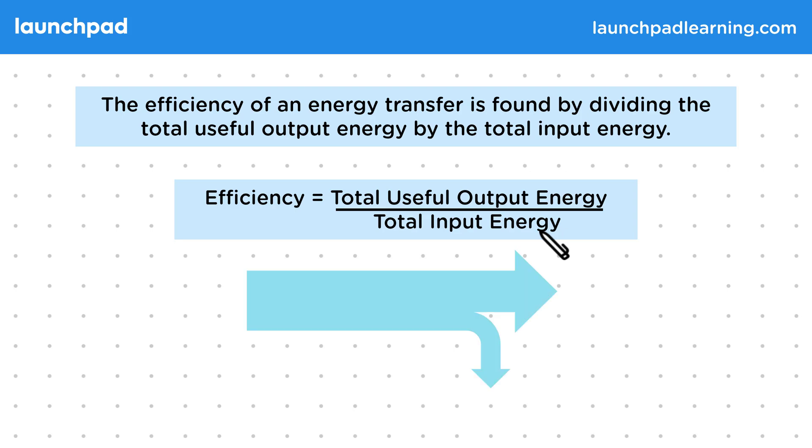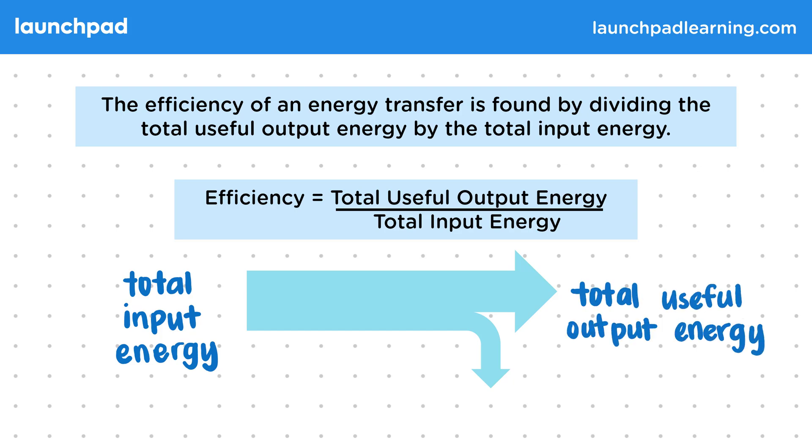We can use Sankey diagrams to help visualize the way energy is distributed. On the left we have the total input energy, and on the right it's broken down into the total useful output energy and also the wasted energy. The total useful output energy is measured in joules and the total input energy is also measured in joules. Therefore, when we divide these by one another, the efficiency has no units. We can, however, give this as a percentage if we multiply the answer by 100.